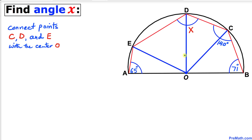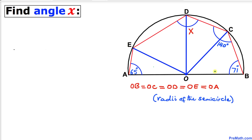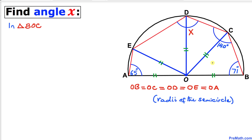Here's our much nicer looking diagram. We can see that line segments OB, OC, OD, OE, and OA are all radii of this semi-circle. Therefore OB equals OC equals OD equals OE equals OA. Now let's focus on triangle BOC.